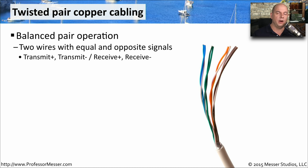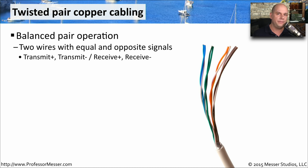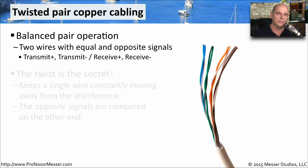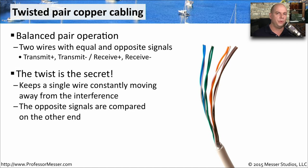Instead of fiber, many home offices and larger organizations use a less expensive form of wiring in the form of twisted-pair copper cabling. This twisted-pair cabling uses a communication method called balanced-pair operation, meaning the two wires in a pair send equal and opposite signals. When the signal is received on the other side, any interference — the common-mode signal — can be filtered out, leaving the original signal. That's a big reason why we twist these cables: one wire is always farther from the point of interference, making it easy to compare both wires and remove that interference.